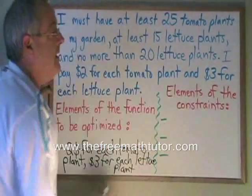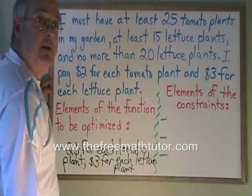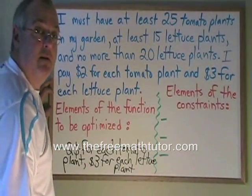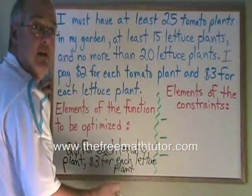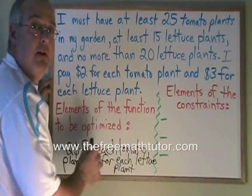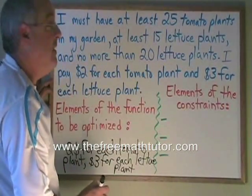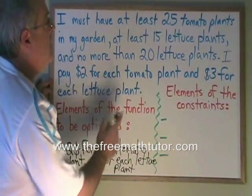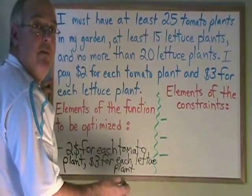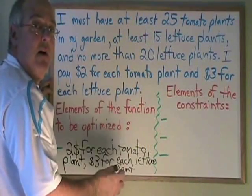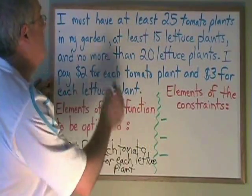Over here, I am being asked to give the elements of the constraints. The constraints are all the limits that are placed on my situation — all the things that involve numbers that place limits around me, guiding my actions.